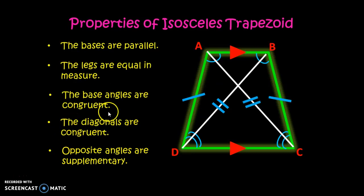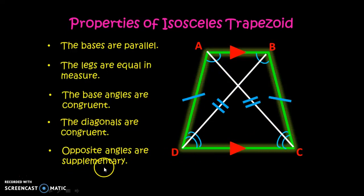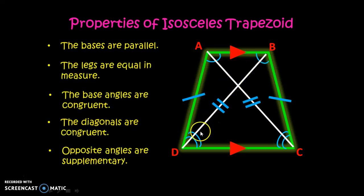Since opposite angles are supplementary, their sum is 180 degrees. This applies to angle A and angle C, which are opposite, and also to angle B and angle D.